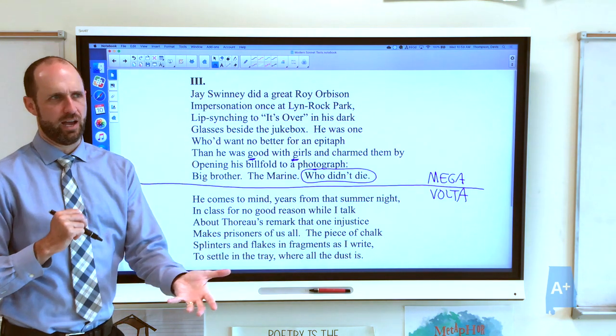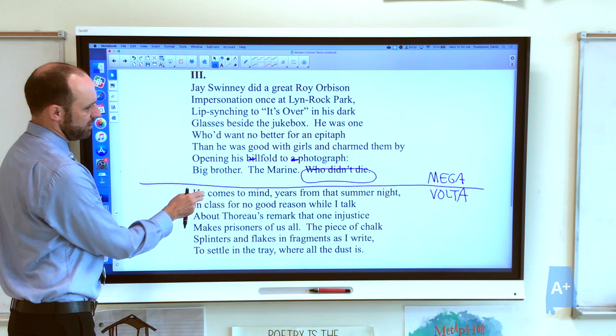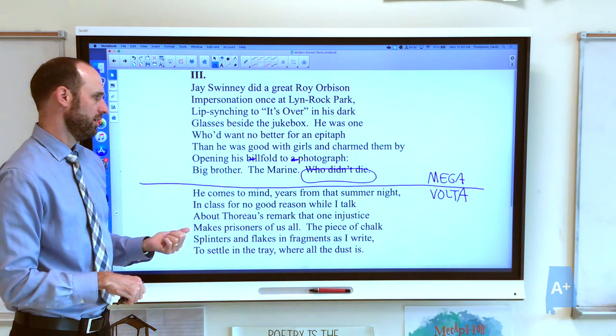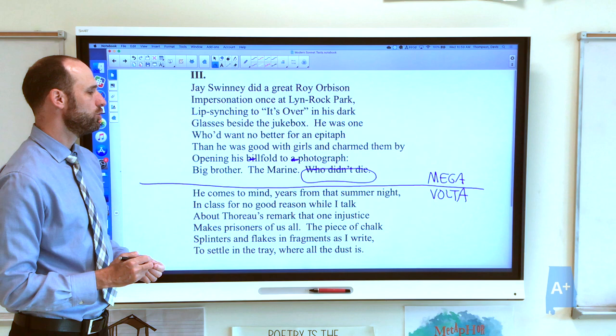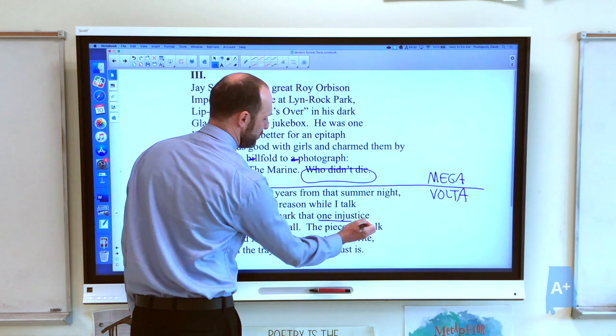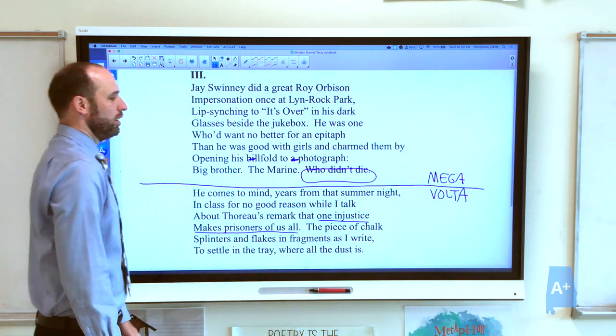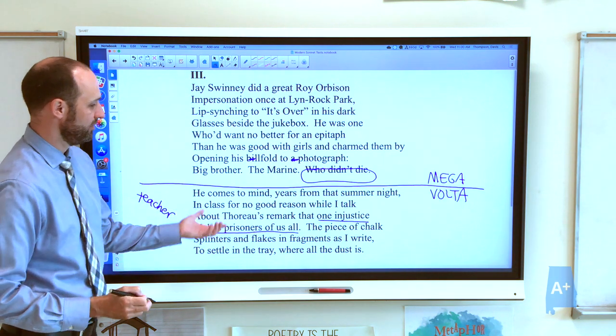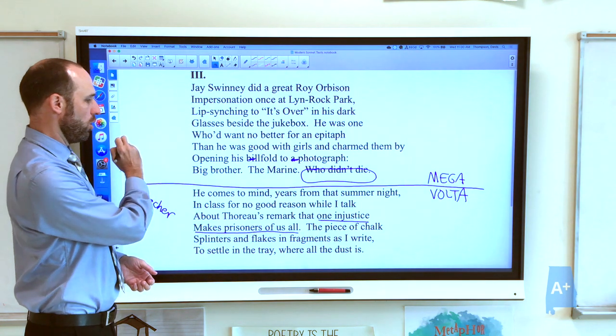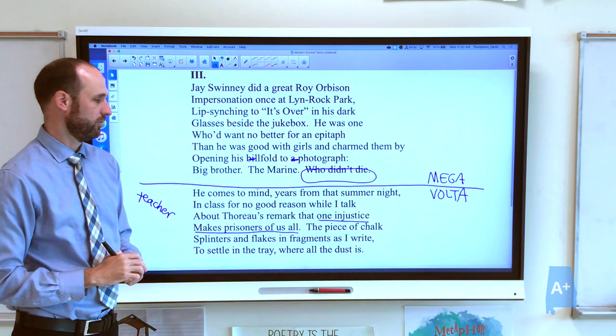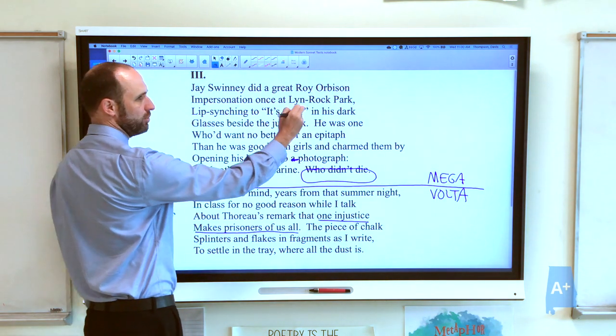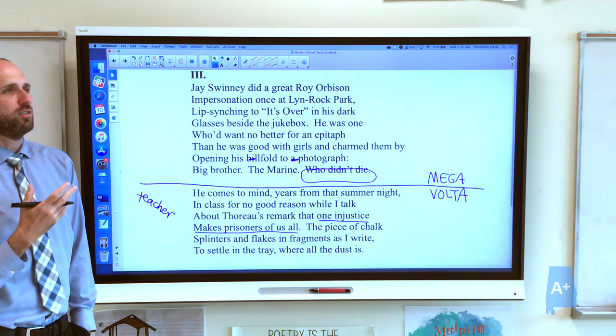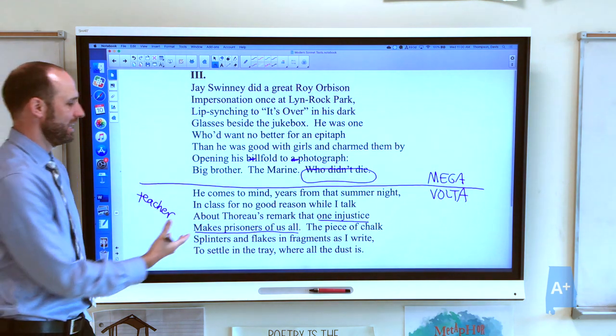So our whole poem shifts now. After we've been through these three guys, our narrator says that Jay Sweeney comes to mind years from that summer night, the summer night that he heard Jay Sweeney lip-syncing, years from that summer night in class, for no good reason while I talk about Thoreau's remark that one injustice makes prisoners of us all. So we learn things about our narrator. We learn that he's a teacher or a professor, and he's probably a teacher of literature or maybe philosophy. He's teaching Thoreau, and he's written on the board, or he's going to write on the board, one injustice makes prisoners of us all. And as he's writing that phrase on the board, he thinks of Jay Sweeney and that night at Linrock Park. He says he comes into his mind for no good reason, but maybe it's just buried and repressed in our narrator why he thinks about Jay Sweeney in relation to this.